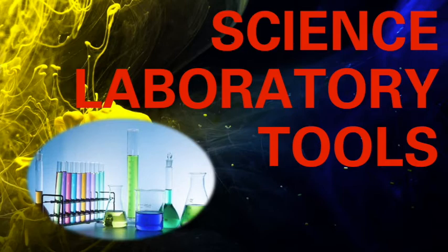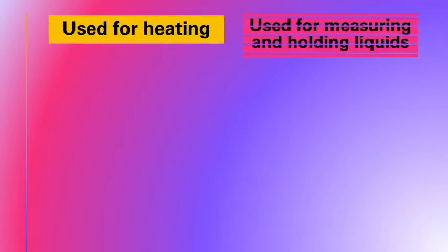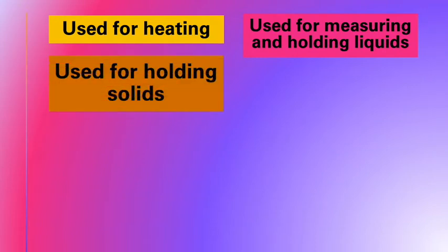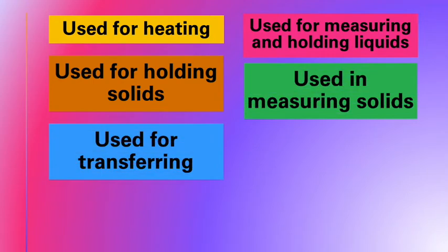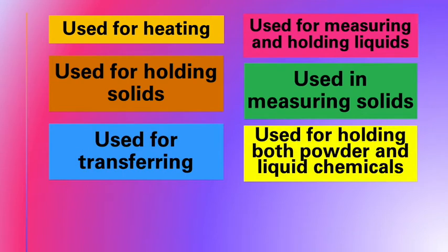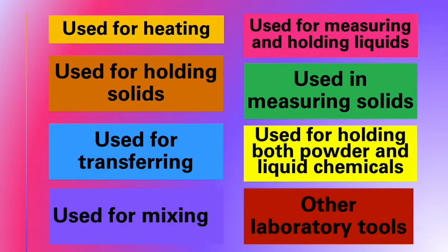Hi kids, our topic for today is science laboratory tools. We're going to categorize them into eight according to their uses: first, use for heating; use for measuring and holding liquids; use for holding solids; use in measuring solids; use for transferring; use for holding both powder and liquid chemicals; use for mixing; and other laboratory tools.